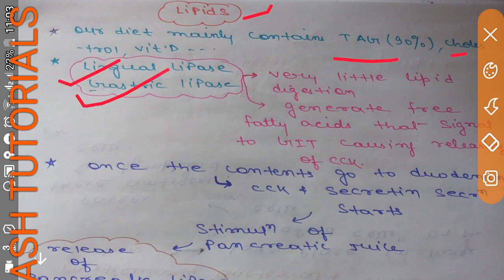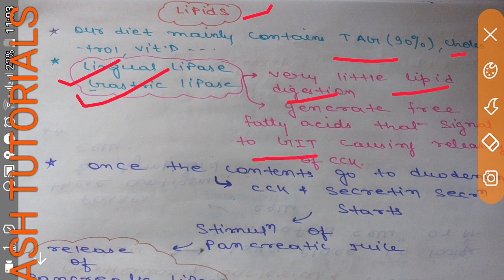Lingual lipase and gastric lipase have very little role in lipid digestion; they act mainly on short-chain fatty acids. However, an important point is that the small amount of lipid they digest generates some free fatty acids, which play a very important role in signaling — they signal the GIT to cause release of cholecystokinin (CCK), and CCK stimulates the release of pancreatic juice.